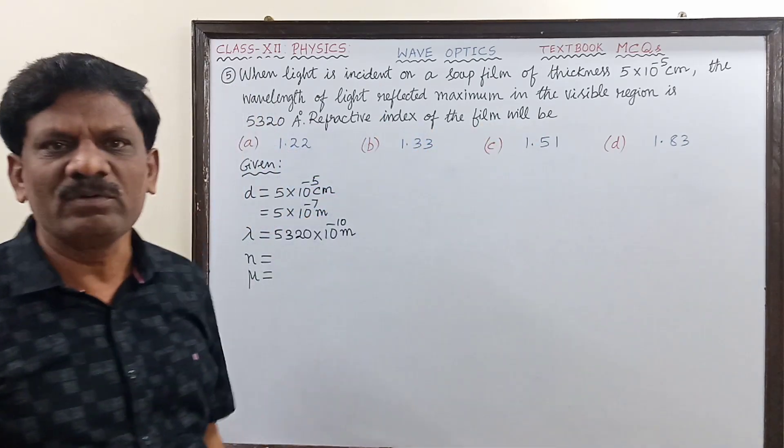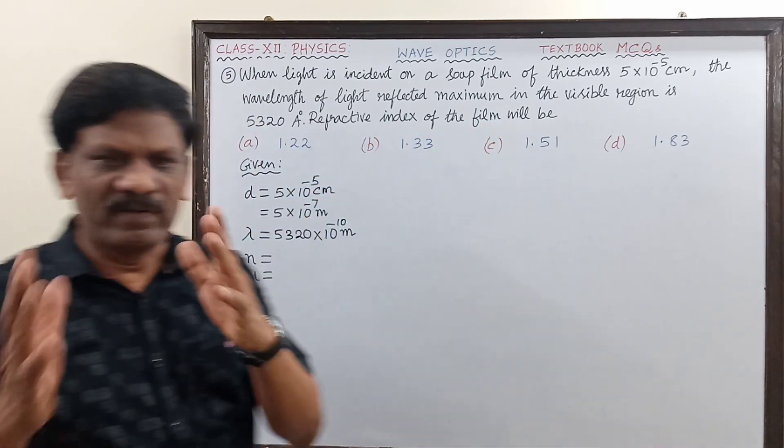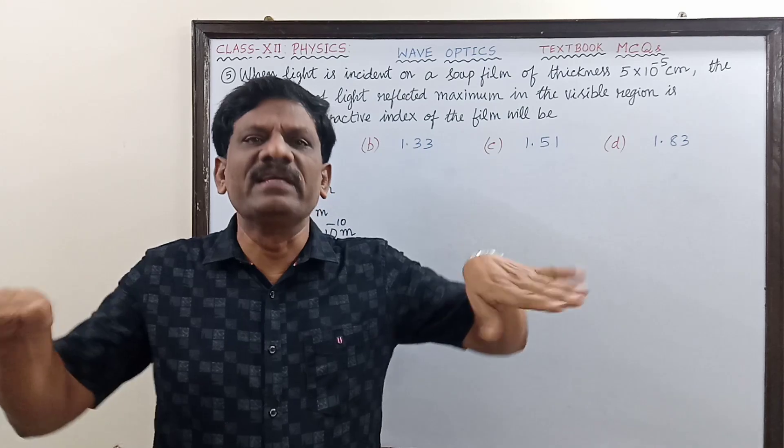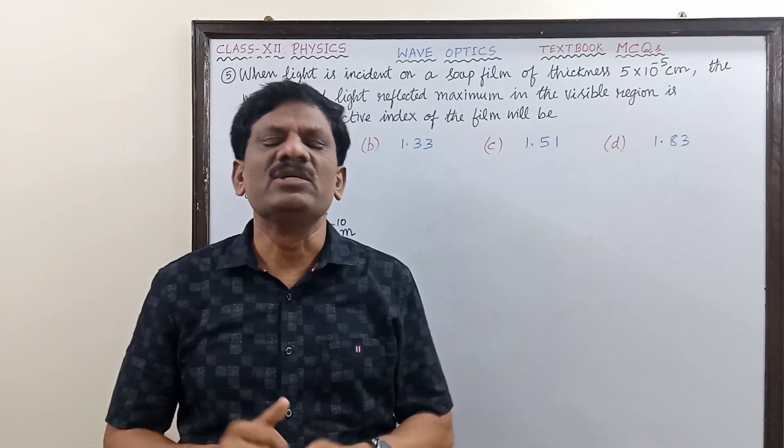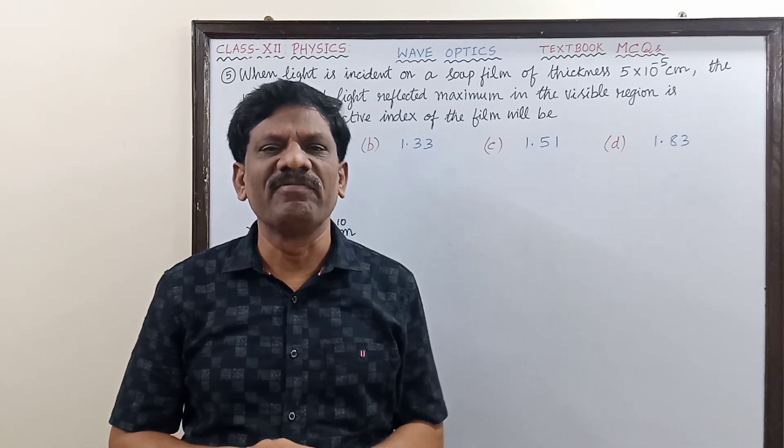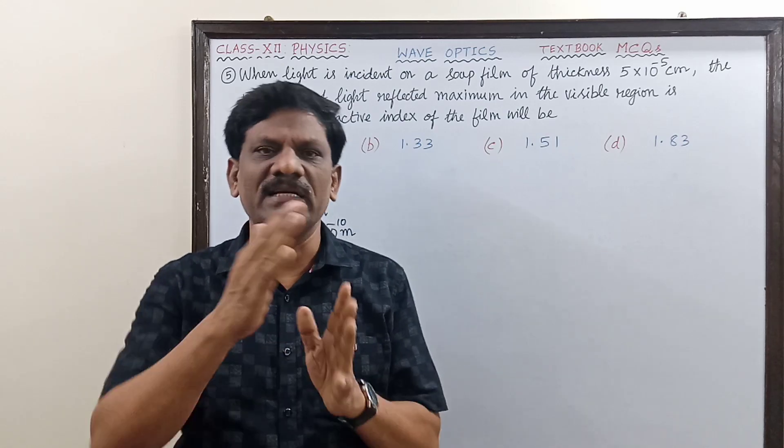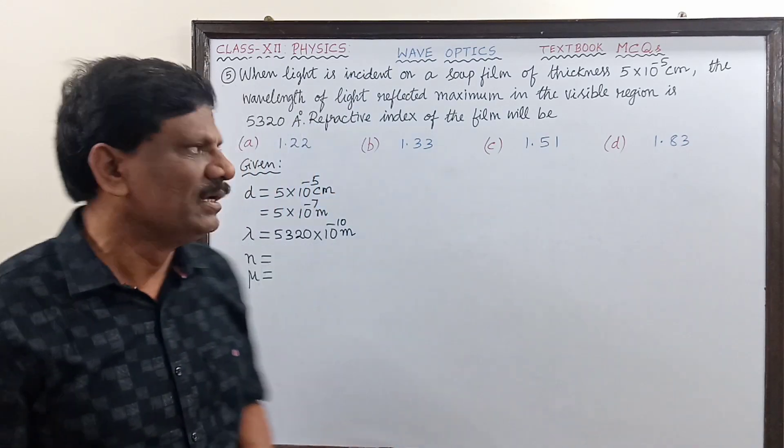We have already studied that the colors of thin films are formed due to the interference of light reflected from the bottom surface and the top surface of the film.